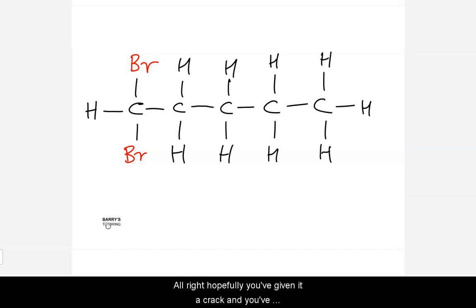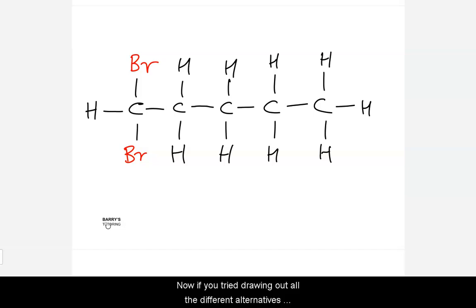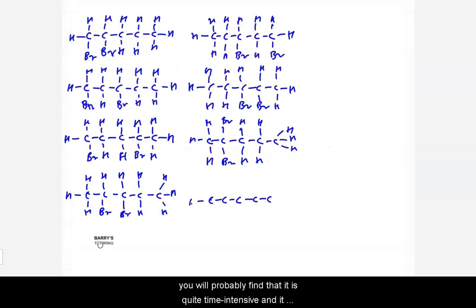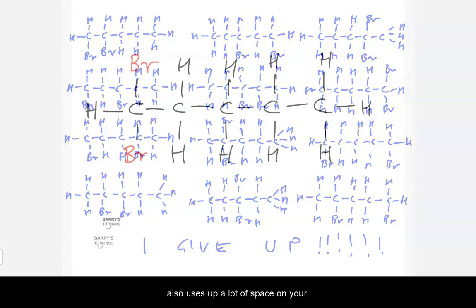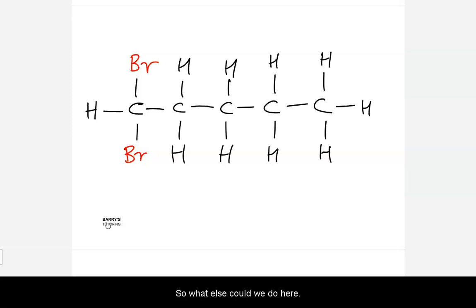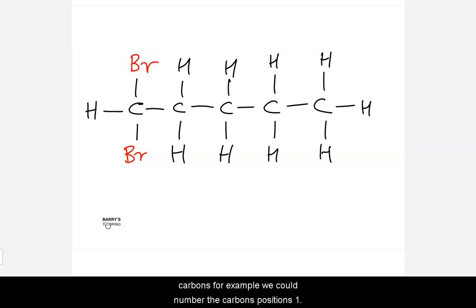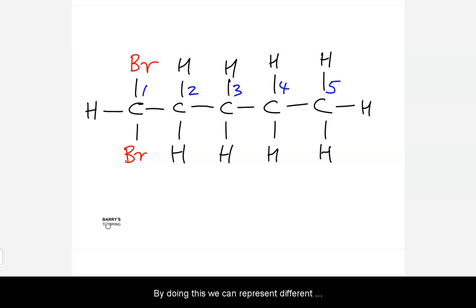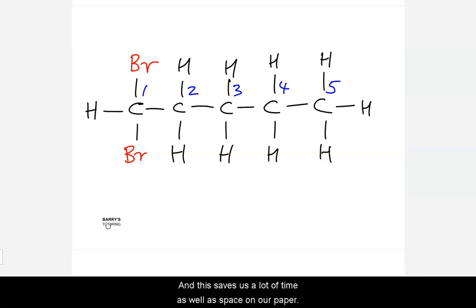Hopefully you've given it a try and come up with a number. If you tried drawing out all the different alternatives, you'll find it's quite time-intensive and uses up a lot of space on your paper or whiteboard. So what else could we do? One approach is to number the carbon positions one, two, three, four, and five. By doing this, we can represent different combinations numerically, which saves time and space.